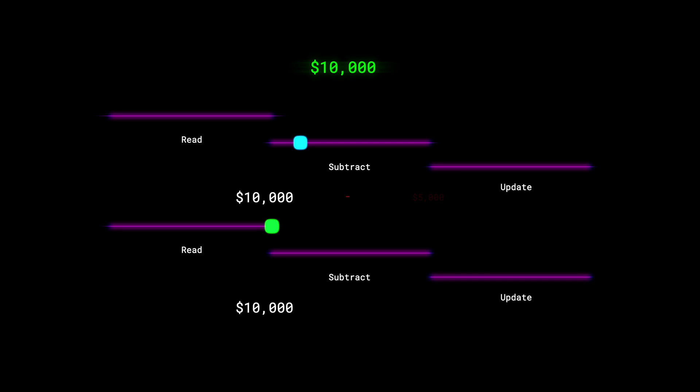Because the first operation has not yet completed, the end result is not five thousand yet, so the second read still sees the same original value as the first. Now both operations perform a subtraction of five thousand, but one of them is subtracting from the wrong source value.